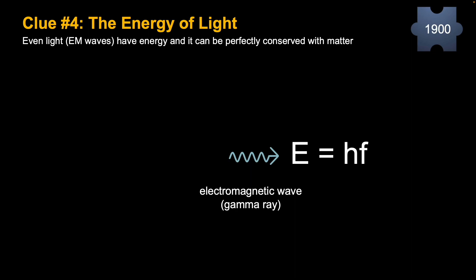The equation in this case is E equals HF, H being a constant, and so the key here is its frequency, the frequency of that wave. So light has energy, and as is also shown, matter can be converted into light or gamma rays in this case.